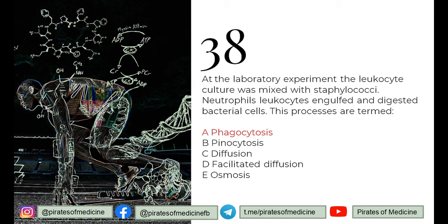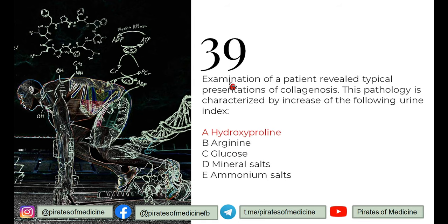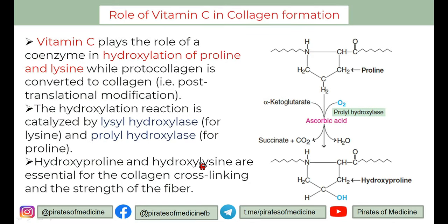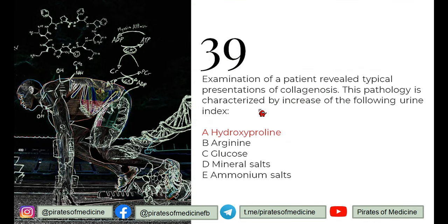Q39: examination of a patient revealed typical presentations of collagenosis. The pathology is characterized by increase of what urine index? As mentioned earlier, collagen cross-linking occurs with the help of hydroxyproline and hydroxylysine, which are essential for collagen cross-linking. If collagen is being destroyed, then there must be an increased quantity of hydroxyproline in the urine.